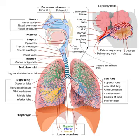The respiratory system is a biological system consisting of specific organs and structures used for gas exchange in animals and plants. The anatomy and physiology that make this happen varies greatly, depending on the size of the organism, the environment in which it lives and its evolutionary history.